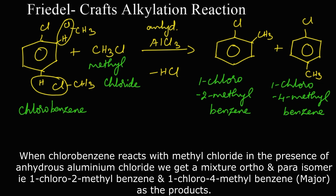The major product obtained is the para isomer, that is 1-chloro-4-methylbenzene, while 1-chloro-2-methylbenzene, the ortho isomer, is the minor product.